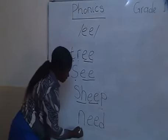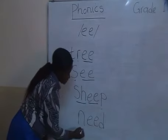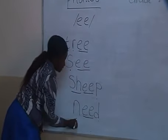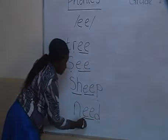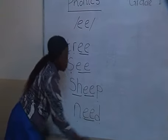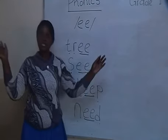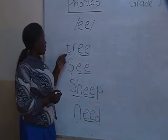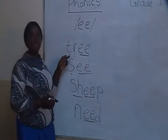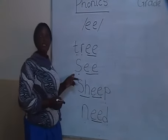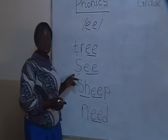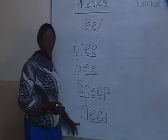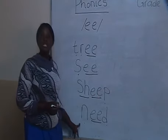The fourth word. N — Ee — D. N — Ee — D. We squash. Need. Okay, so the first word is tree. The second one, sea. The third one, ship. The fourth one, need.